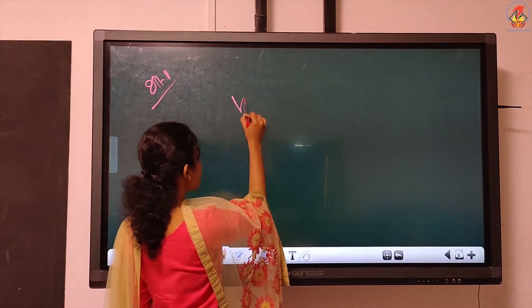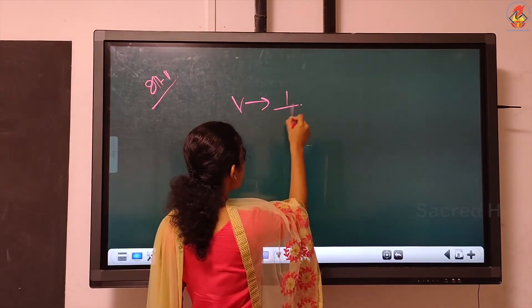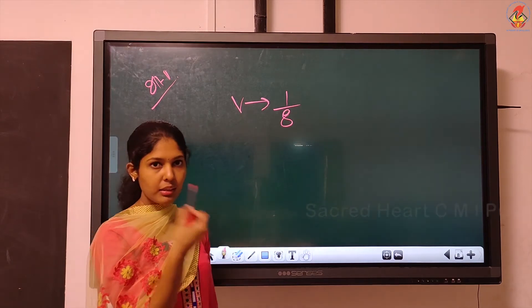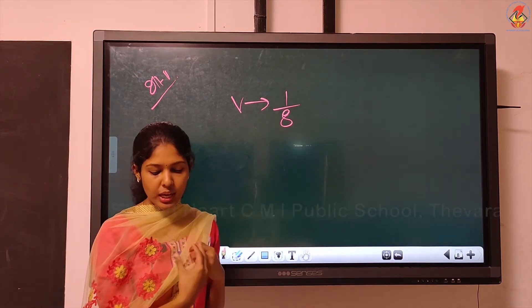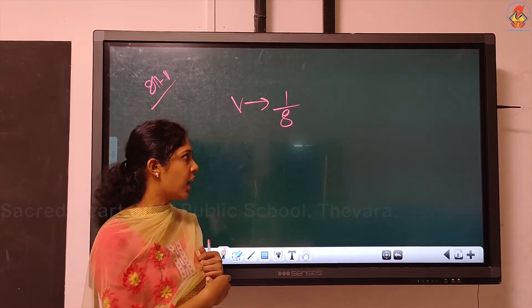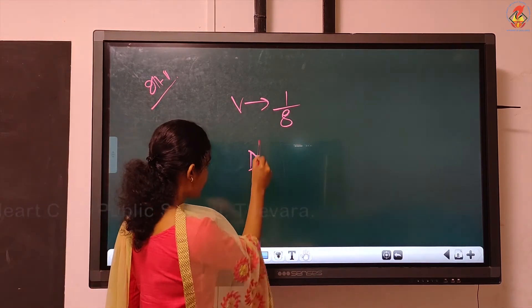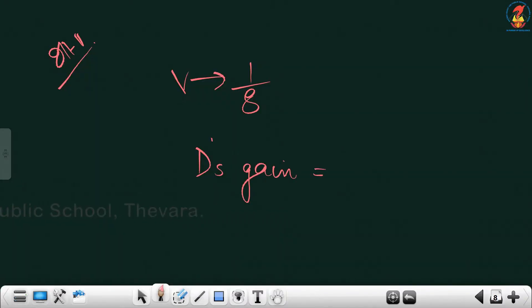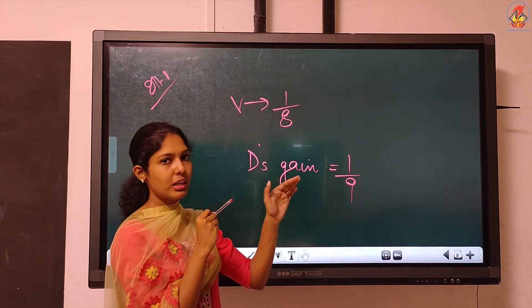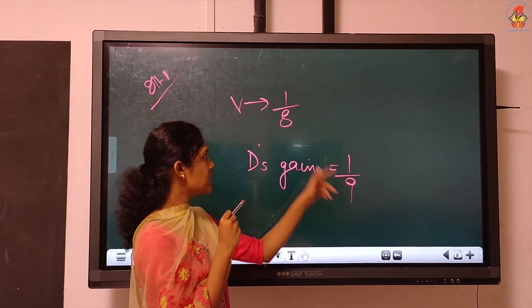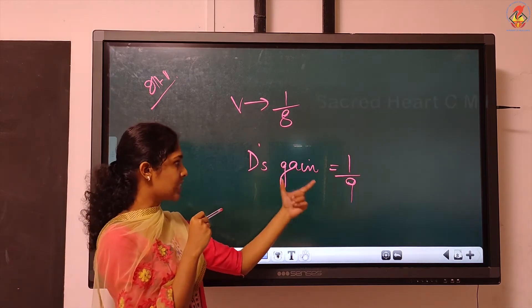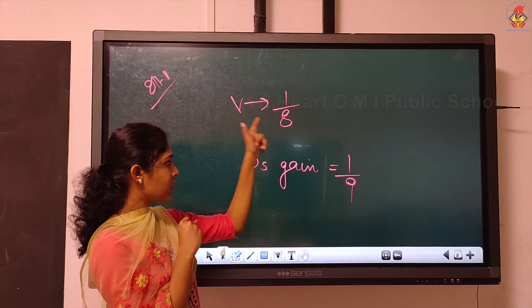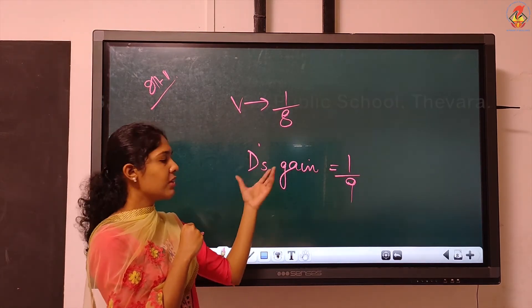Vikas's share is 1/8 and he surrenders. The retiring partner will normally sacrifice. Vikas surrenders 1/9 from his share in favor of Divya — that means Divya's gain. He is sacrificing 1/9. 'From his share' means this Vikas share is given to Divya, so Divya is gaining 1/9.